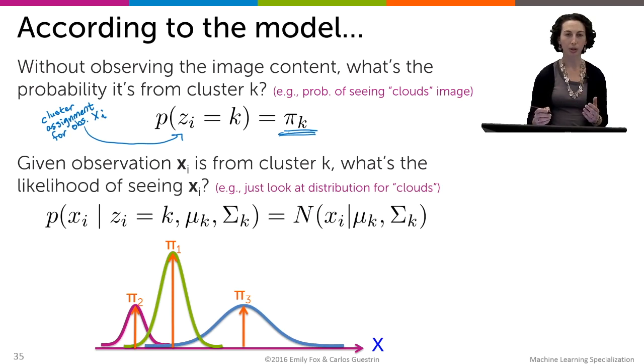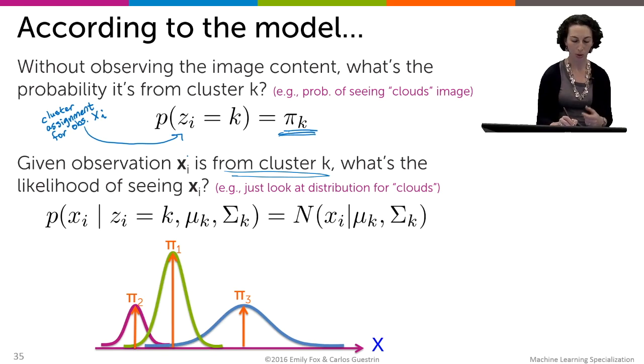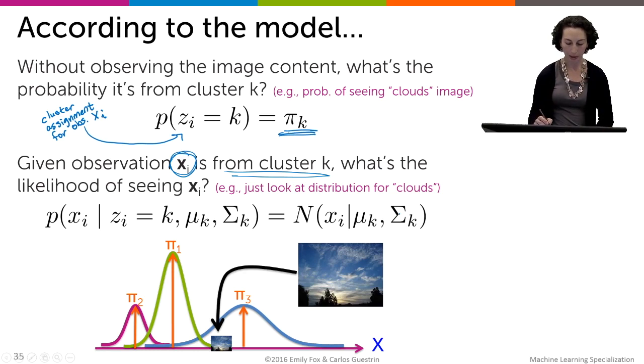Another question is: what if I know that an image comes from cluster k? I'm going to fix that. I already know that it's a clouds image. Now I can say, what's the likelihood of observing the RGB vector associated with this image, x_i, given that the image came from the kth cluster, this cluster of cloud images?